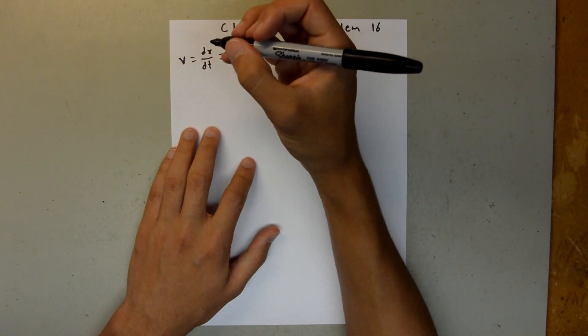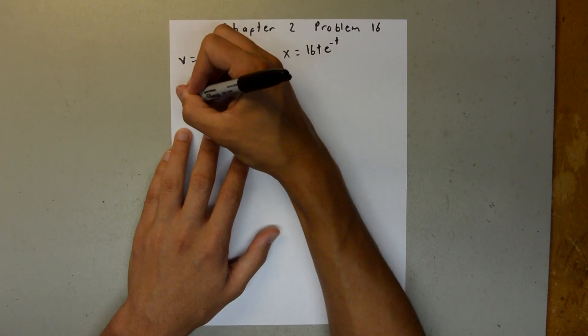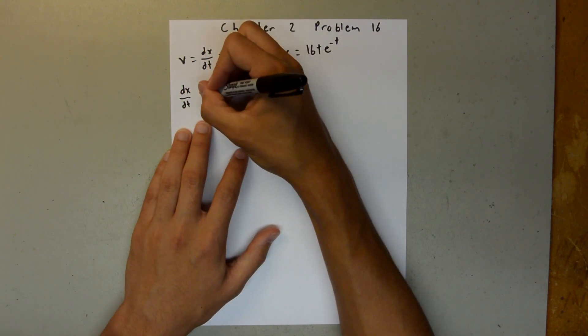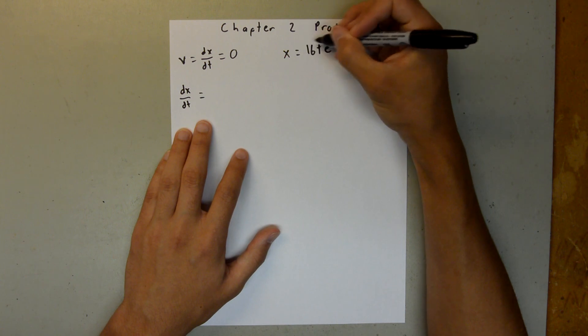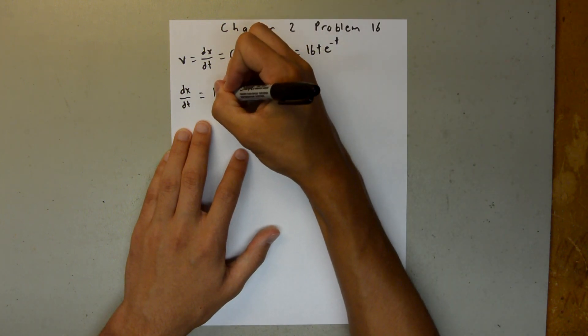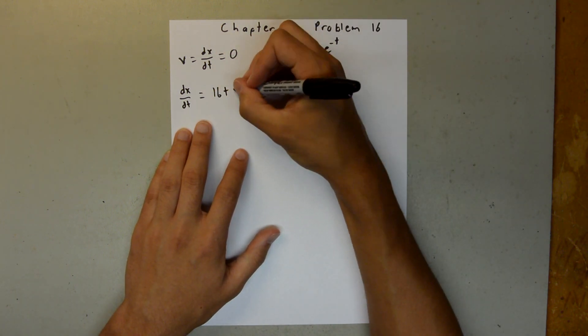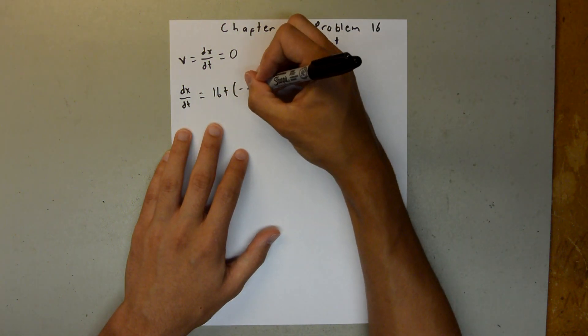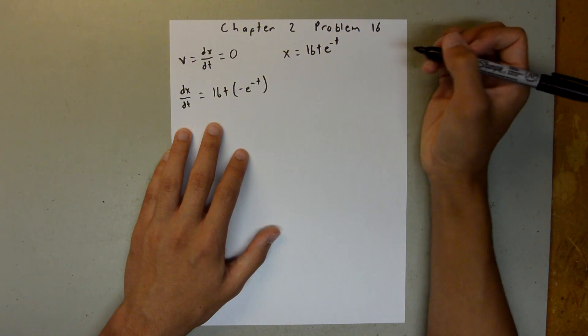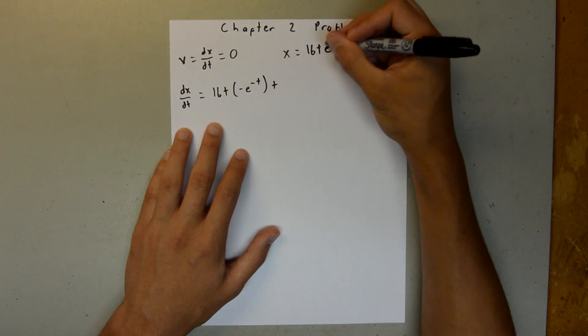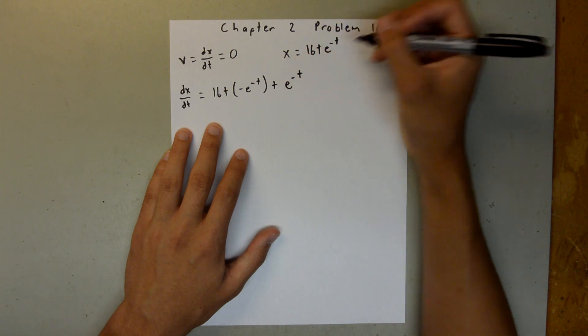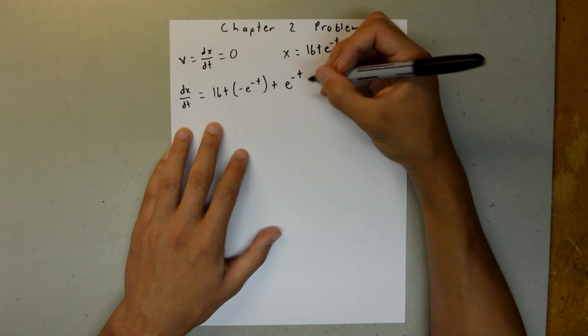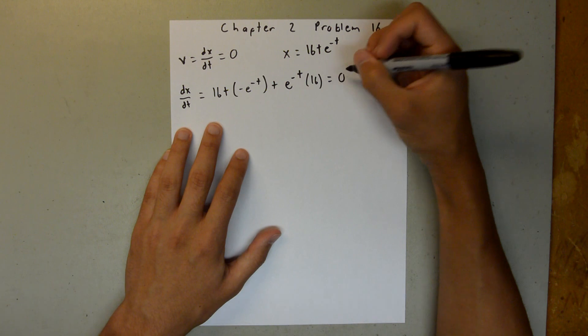And so we want to do dx dt is equal to, it's going to be the first here, so 16t, times the derivative of this second piece, which is going to be negative e to the negative t, plus the second e to the negative t, times the derivative of the first, which is going to be 16. And that has to equal 0.